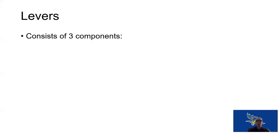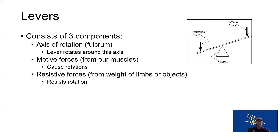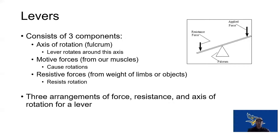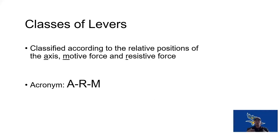We can organize levers in different ways, but we always have an axis, a motive force, and a resistive force. How we arrange them determines how much force we need to put in and how much motion occurs at either end. We call these classes of levers, and we use the acronym ARM — Axis, Resistive force, Motive force — to determine the organization and advantages of each class, because each class has its own purpose and advantages.